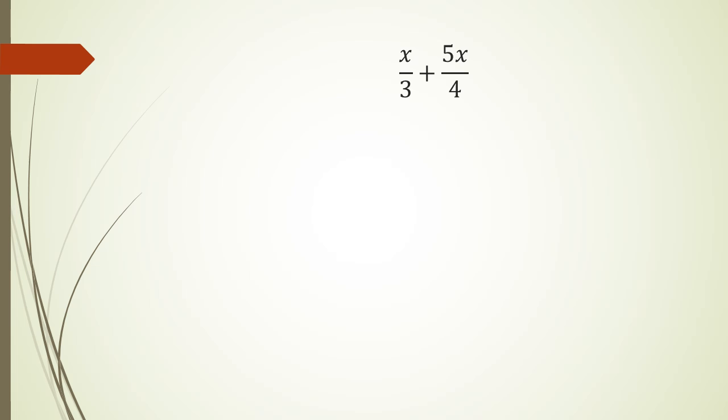So in this case, I've got a denominator of 3 and 4. I know that the lowest common multiple between 3 and 4 is 12. So I need to change the denominator into 12. For the first fraction, I have to multiply the denominator by 4 and the numerator by 4. And as for the second fraction, I need to multiply the denominator by 3 and the numerator by 3. When I do this, I'm going to get 4x over 12 plus 5x times 3 is 15, 15x over 12.